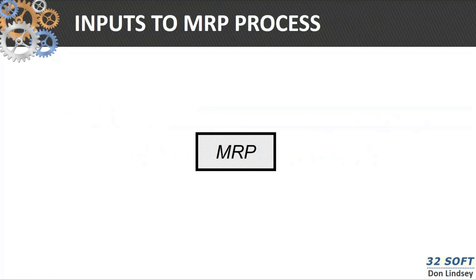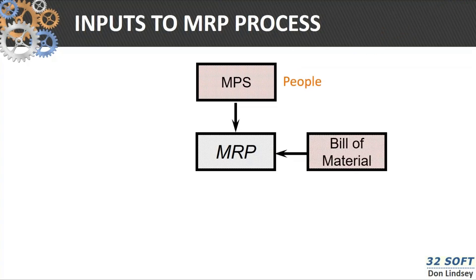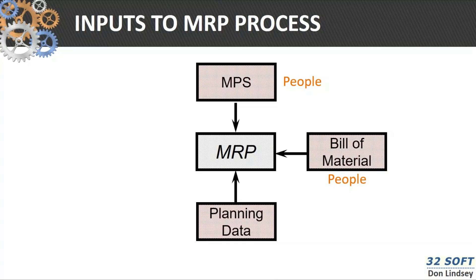The inputs to MRP are basically the master production schedule. We talked about the fact that we have the independent demand items — we have to do forecasts at that level, and we use confirmed planned orders in that area. That is done by people. The bill of material is the structure of your product — again, people do that.